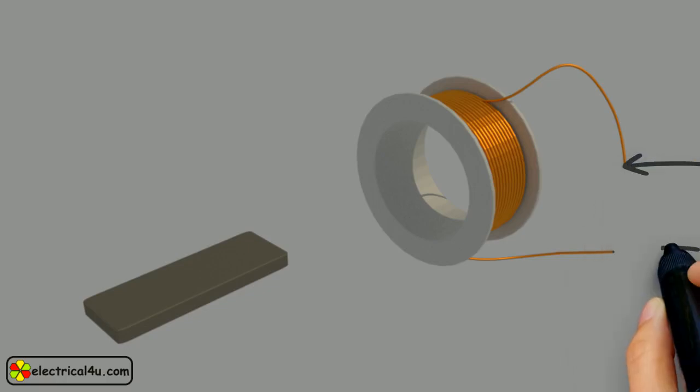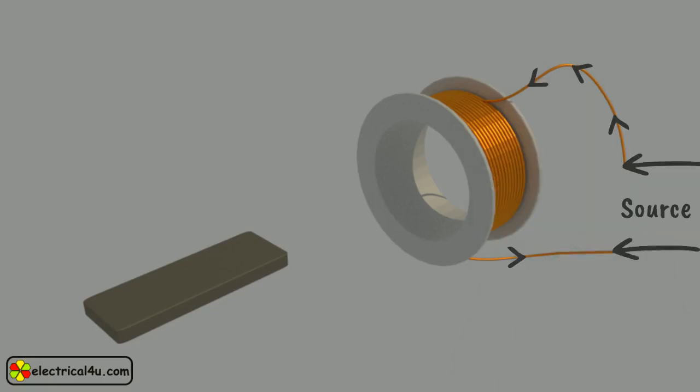Let us connect this source with this coil. When the current is flowing through the coil, it produces flux. Hence, this coil becomes an electromagnet. Naturally, the iron vein moves.